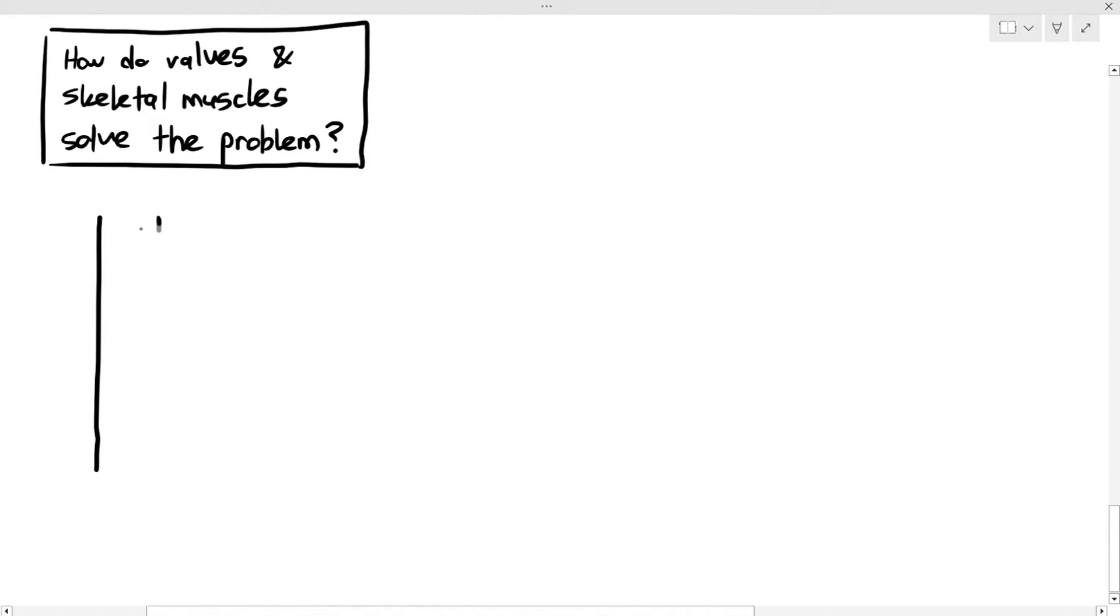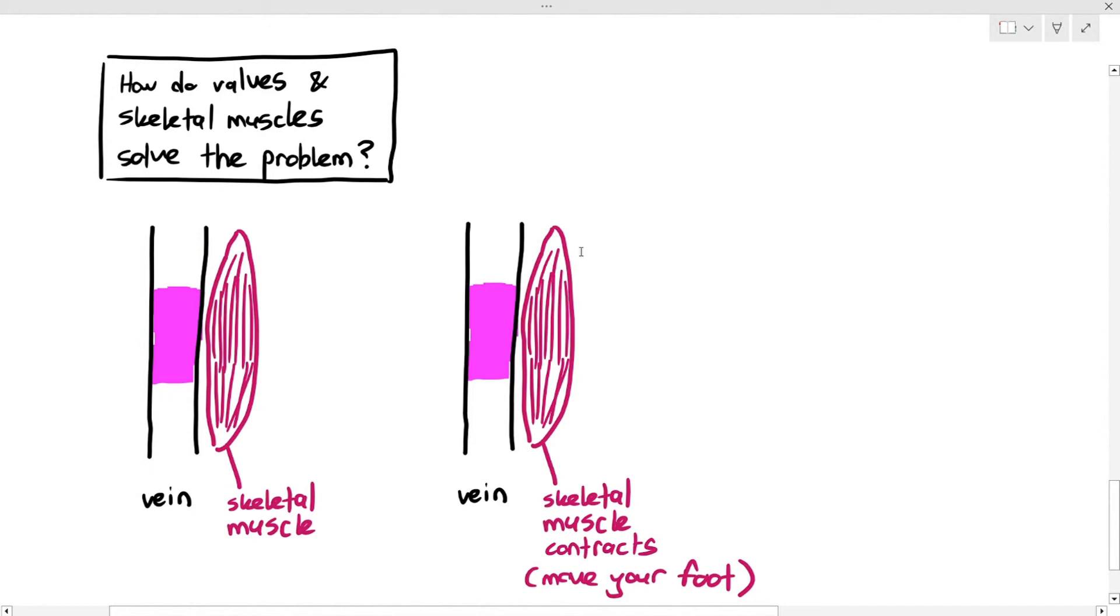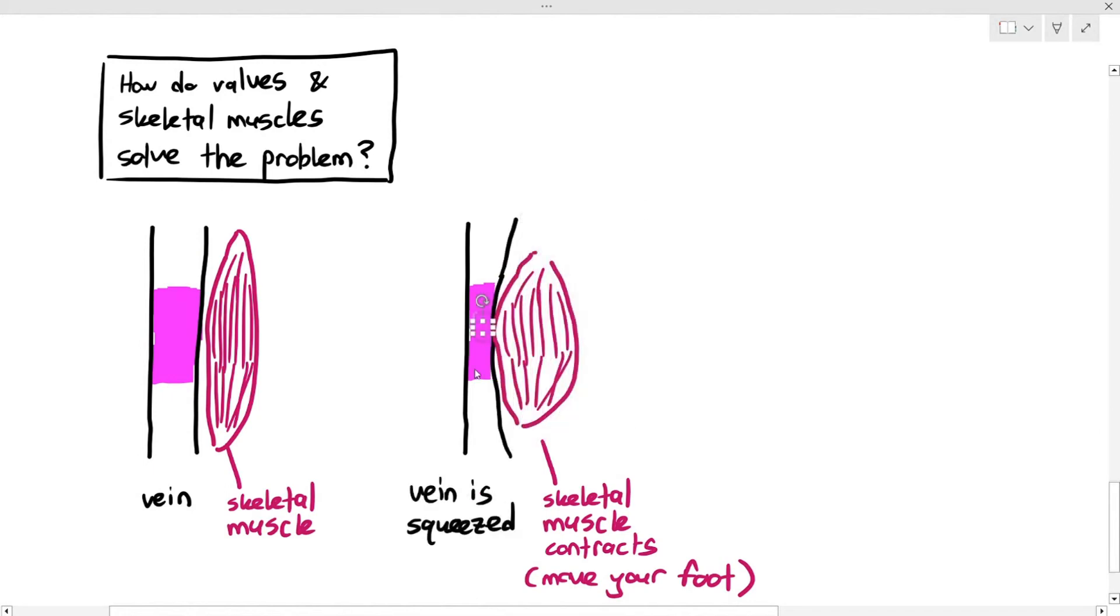So, how do valves and skeletal muscles solve the problem? I'm drawing a simple vein, and the pink color highlight in the vein is, for example, blood. Okay? And as you can see, the blood is just stuck midway right there. Now, next to the vein, there is a skeletal muscle. Now, when the skeletal muscle contracts, especially when you move your feet or you move your leg, the muscle squeezes, the muscle becomes shorter, and it becomes thicker. When it becomes thicker, it presses against the vein, and it squeezes the vein. Now, why is this good when it squeezes the vein? It's because when the vein is squeezed, it pushes the blood upwards, which is a good thing.